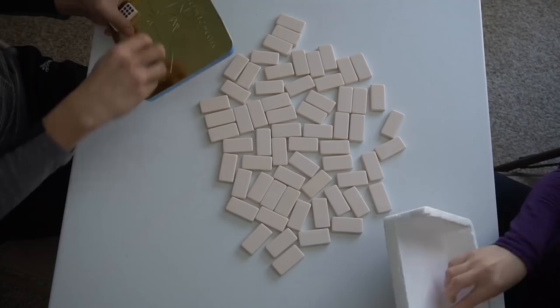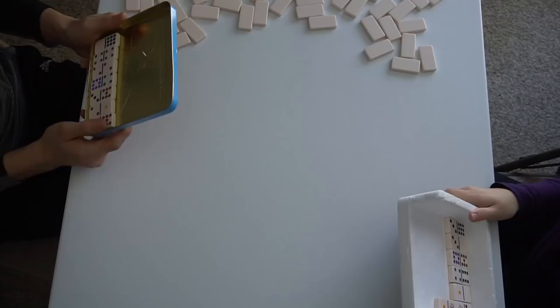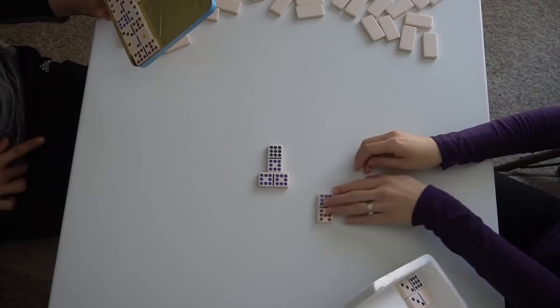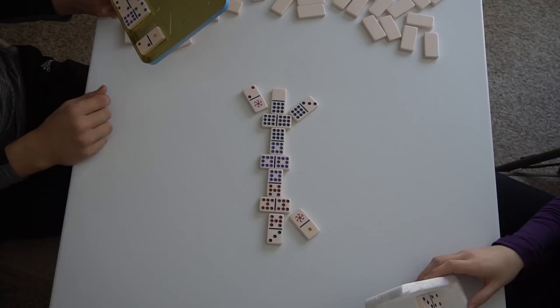After the scores are recorded, flip all the dominoes face down again, shuffle well, draw seven dominoes each, and begin round two. If no one has an 8-8 or a spinner-spinner, the player who won the last round gets the honor to draw first. Once the right double is drawn, you can then start building your pattern.